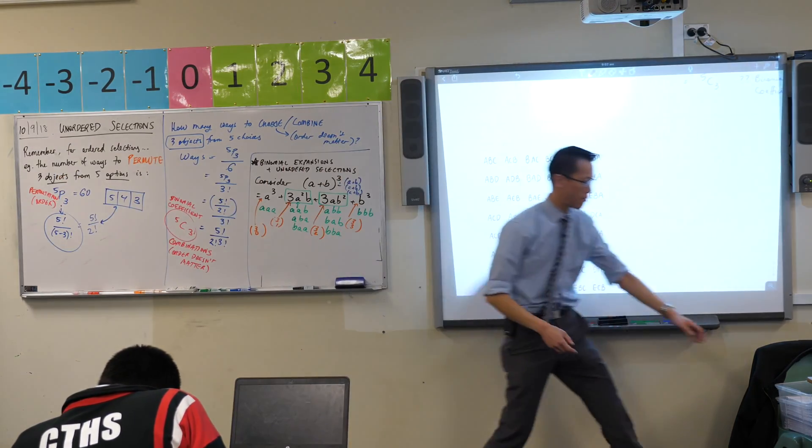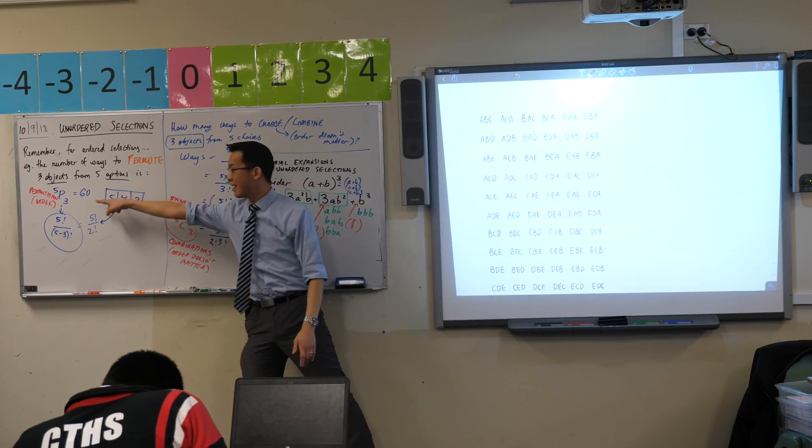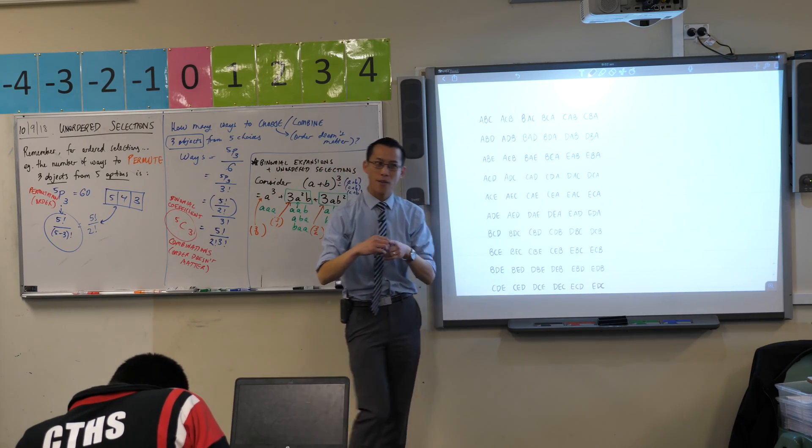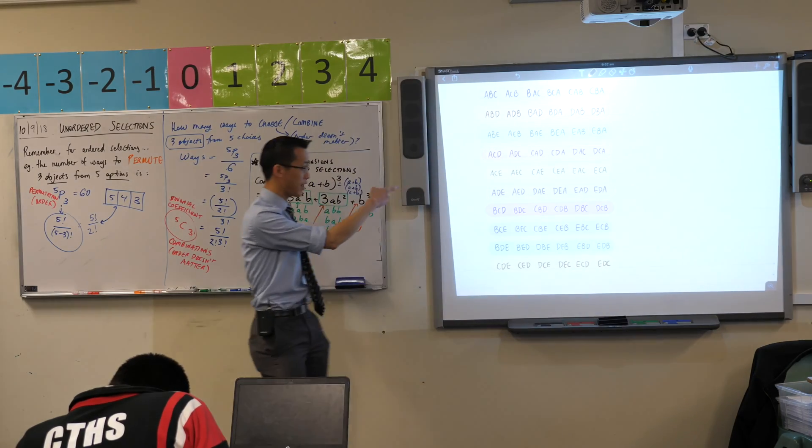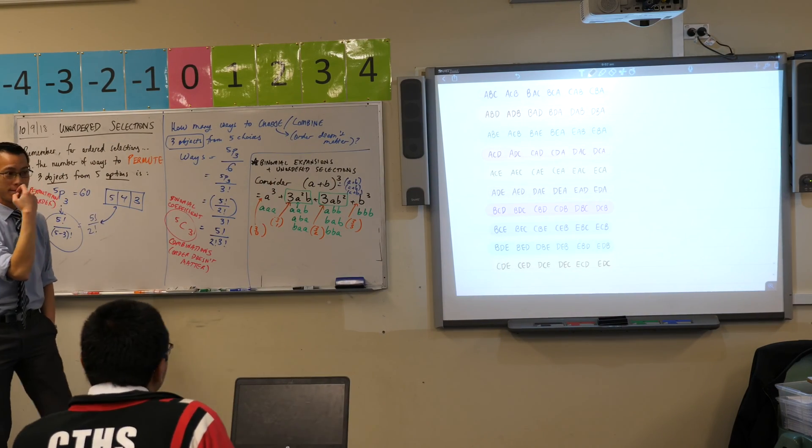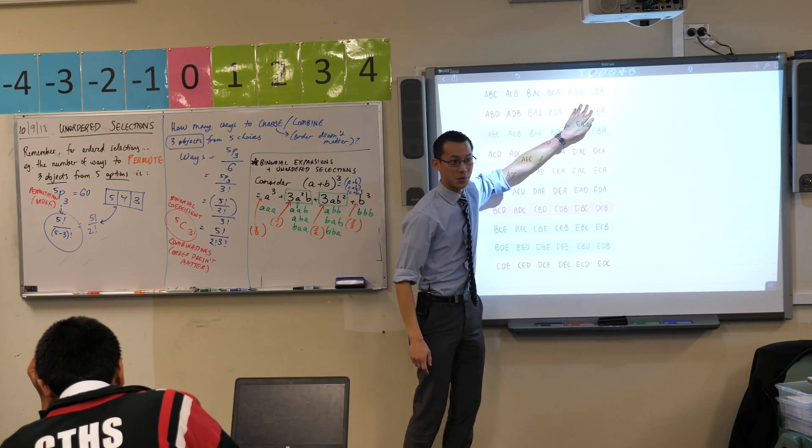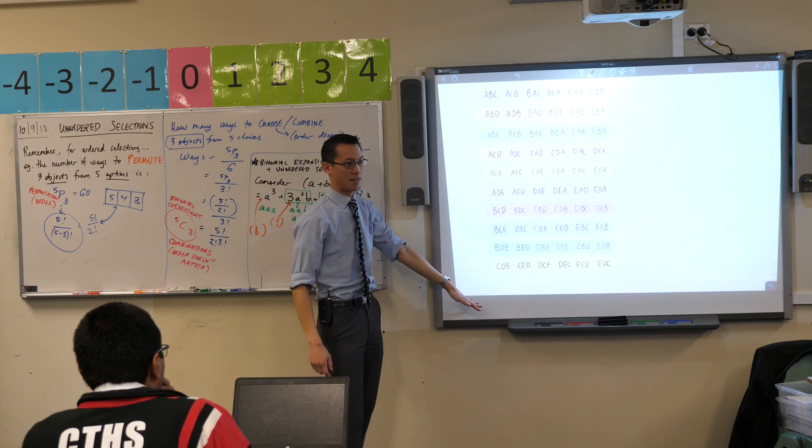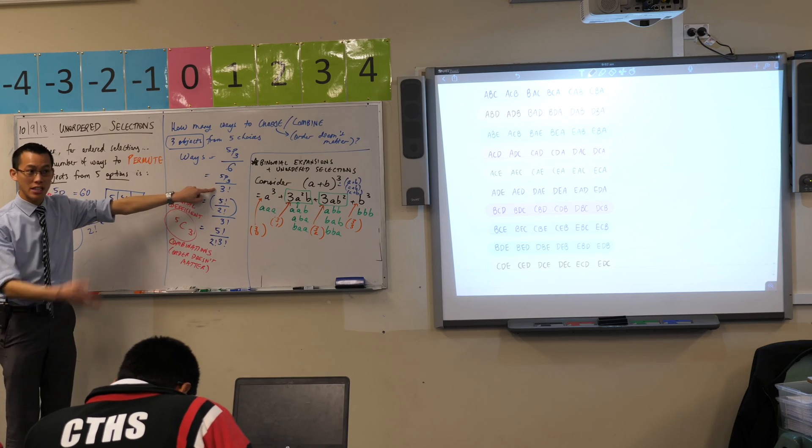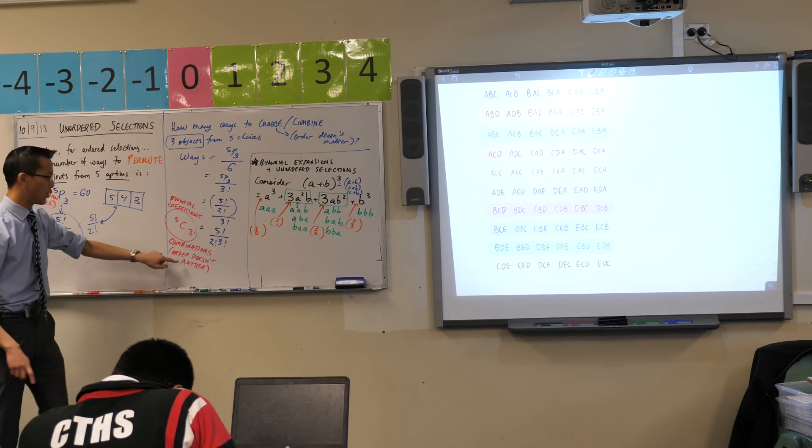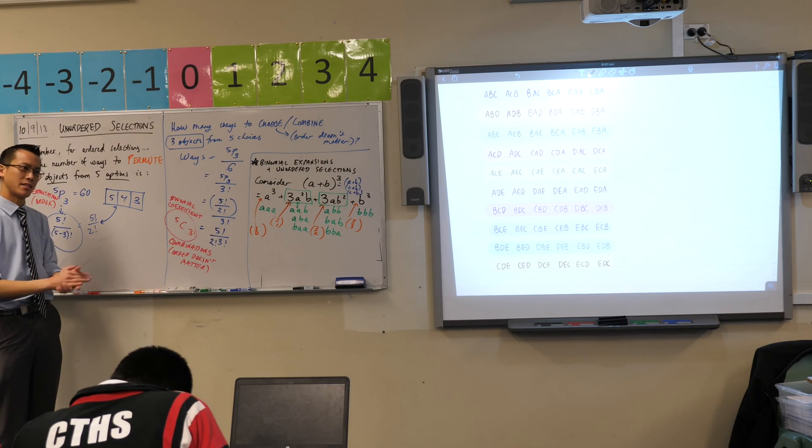So, here is 5P3, right? 5P3 is a huge number because you've got to consider all of the orders changing your actual arrangement, right? But then 5C3 will give you a dramatically smaller number. What is it, by the way? 5C3? Can you read 5C3 off of here? Remember, these are all identical when you don't worry about order. These are all identical. So, how many rows are there? There are 10. 5C3 is, of course, 60 divided by 6, which gives you the 10. It's a small number because when order doesn't matter, a whole bunch of those options end up being identical. So, you don't count them, if that makes sense.